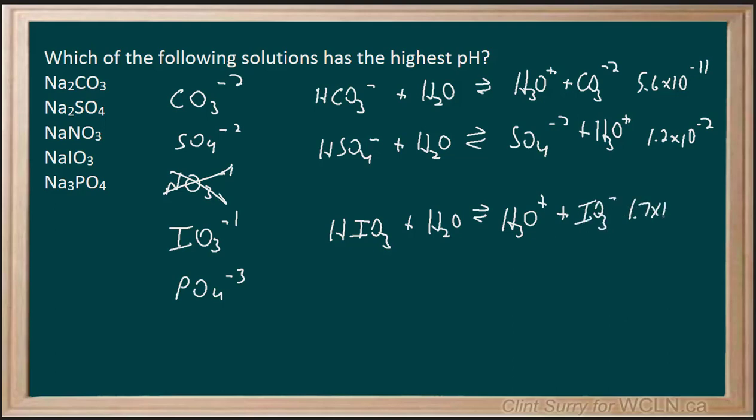And then finally phosphate is found with HPO4 minus 2 plus water giving us PO4 minus 3 plus H3O plus at 2.2 times 10 to the minus 13.